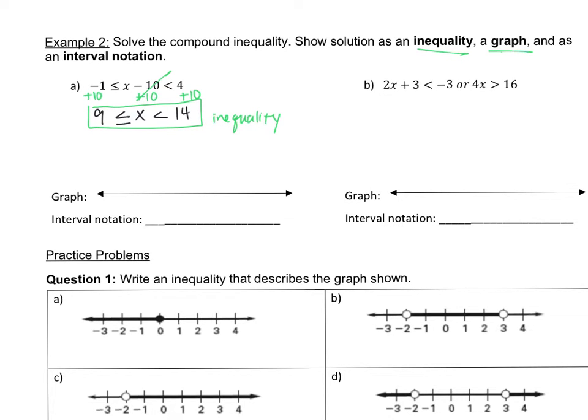Part 2 says to graph. So you're going to take this inequality, graph it on the line, very similar to what we've done in the past. We need a closed circle on the 9 because we notice there is an inequality sign with a line underneath, and an open circle on the 14 because there is no line on the 14. This says that x is between 9 and 14, so I'm going to shade between the dots or the circles. There we go, we have our graph.